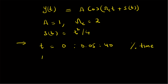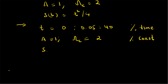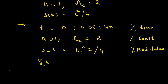The second step is we create the constants: A is equal to 1 and omega_c is equal to 2. Then we create the s(t) function, which is equal to t dot caret two divided by four — that is t squared by four. That is the frequency modulation term.